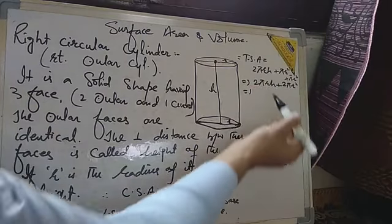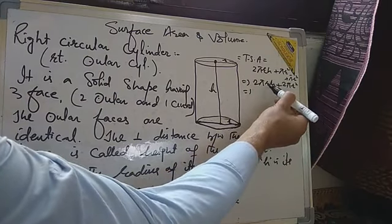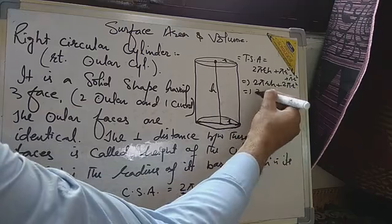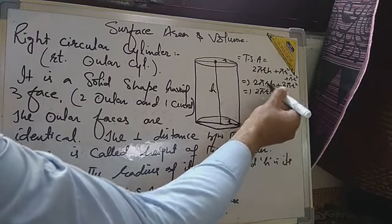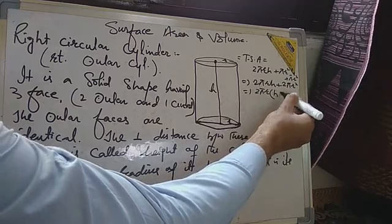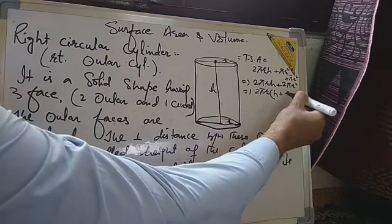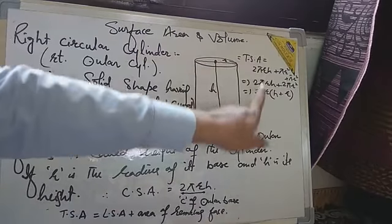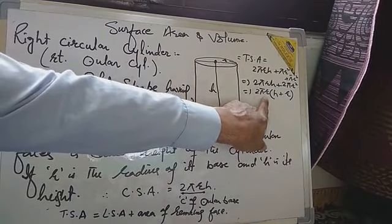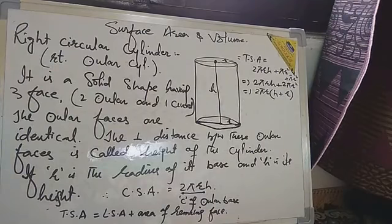Taking the common terms — 2 is common, π is common, R is common — taking 2πR as common. From the first term, H remains; from the second term, R remains. So the total surface area becomes 2πR(H + R). This is the total surface area of the cylinder.